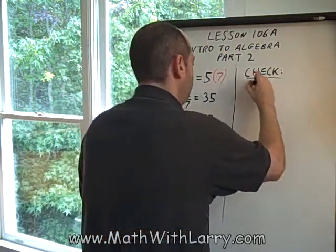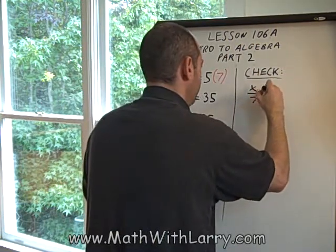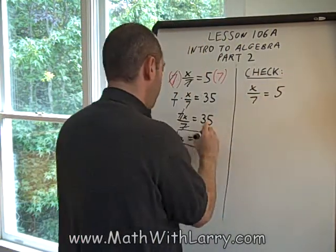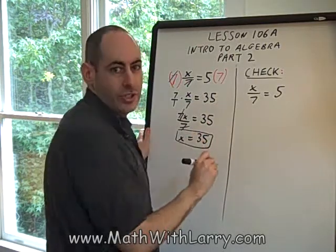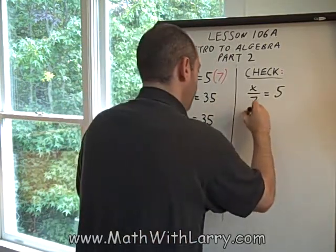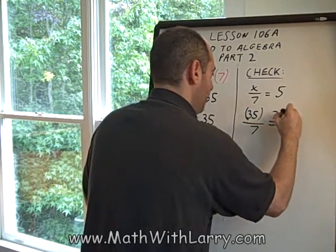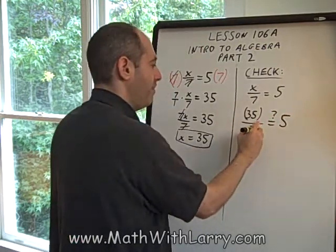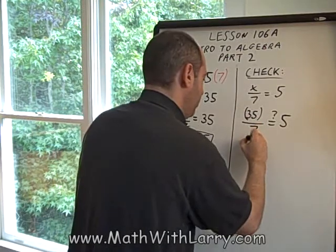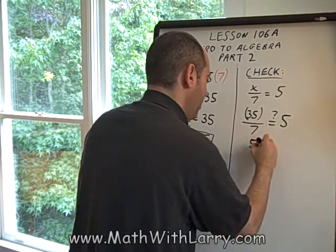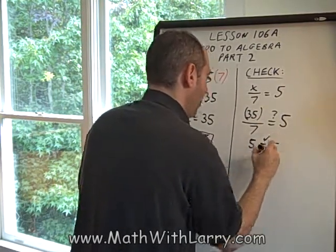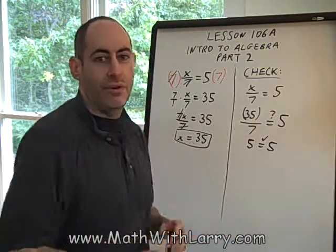Okay, to check, I'll rewrite the original equation. I'll substitute what I think is the correct answer, x equals 35. I'll put it in parentheses just to show that that's my check value. And does 35 divided by 7 equal 5? Yes, it does. 35 divided by 7 is 5, which equals 5. So that shows that our answer of 35 is correct.